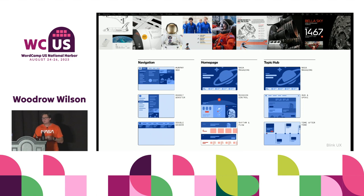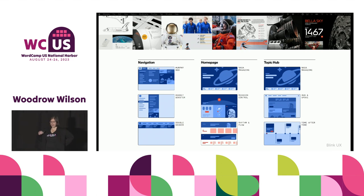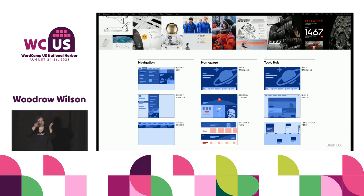As we prototyped and started integrating and testing the design system using Gutenberg, and prototyped with segments of our content creator user base, it became pretty clear that WordPress was the right solution. One thing I really love about the Blink UX design journey is how we iterated on navigation. We tried a rocket booster vertical menu, a double-decker horizontal more typical of the USWDS, and we ultimately landed on what we call the Murphy bed menu — it opens right up. I love that name.